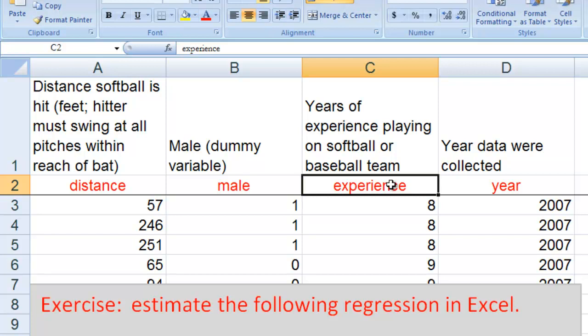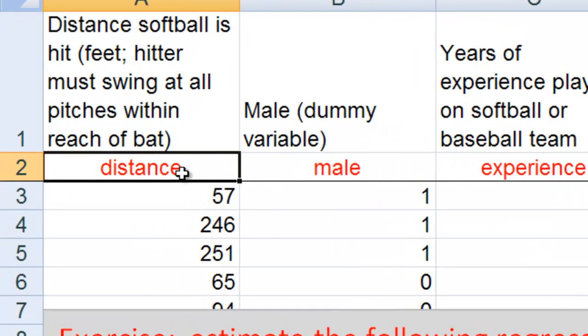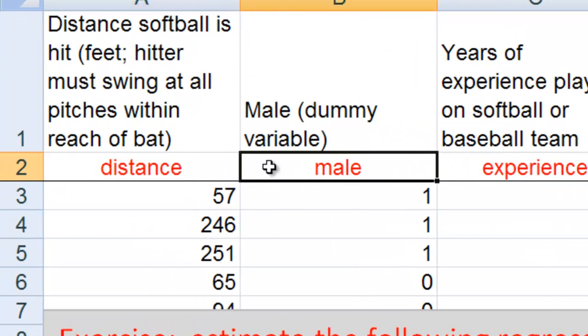We also have information on the amount of experience they have on the ball team and the year the data were collected, but in this example, we're only going to care about hitting distances and the male dummy variable